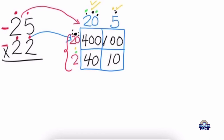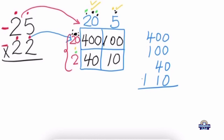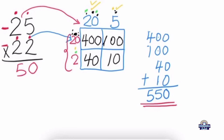Remember, our aim is to find out what is 25 times 22. We add up all the numbers inside the box, starting from the largest down to the smallest: 400 plus 100 plus 40 plus 10. Adding them all up: 0 plus 0 plus 0 plus 0 is 0; 0 plus 0 plus 4 plus 1 is 5; 4 plus 1 is 5. Our answer is 550. So 25 times 22 is 550. Thank you very much.